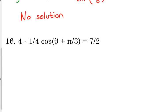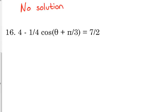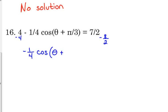Let's look at one that has a lot going on — stuff outside and inside the trig function. Number 16: 4 minus one-fourth of cosine(θ + π/3) equals 7/2. First, I need to address that someone might want to combine 4 and negative one-fourth, but you can't because the one-fourth is attached to the cosine. So your first move is to subtract 4 from both sides. I'll express 4 as 8/2 to subtract from 7/2.